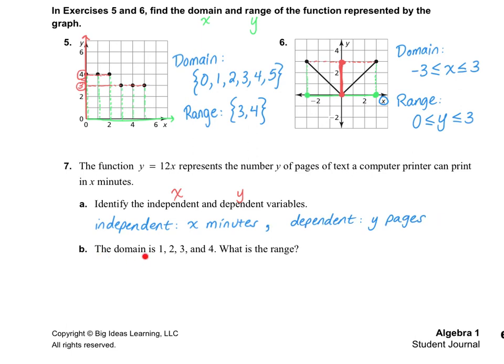Letter b says the domain is one, two, three, and four. So what's the range? In this case, what we need to do is plug in one, two, three, and four into the independent variable. So I'm going to plug in one, so it'd be 12 multiplied by one. So that gives me 12. And then I have 12 multiplied by two, which is 24, and so on. So these are the answers that I got for y, and so that is the range.